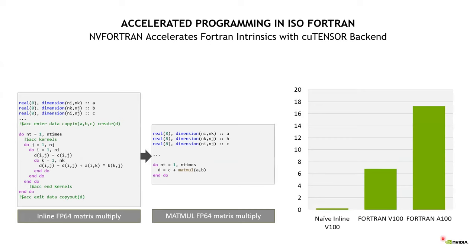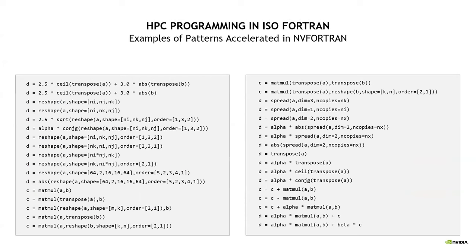Regarding math intrinsics: I hope none of you have a naive matrix multiplication in your code, but if you do, one thing you can do is replace it with a MATMUL operation. You can see you get a pretty substantial performance benefit because we're able to map this to our accelerated math libraries. And that's not limited to just simple things like matrix multiplication — we support a pretty broad range of these intrinsics.